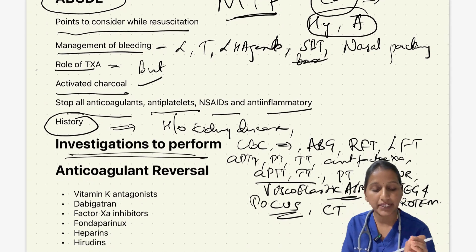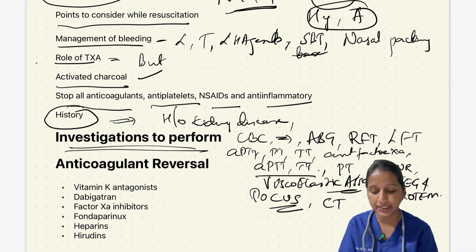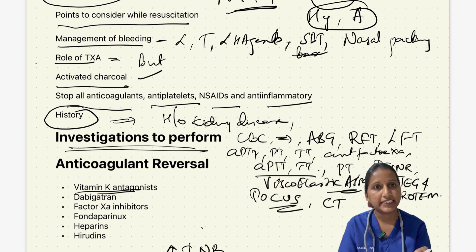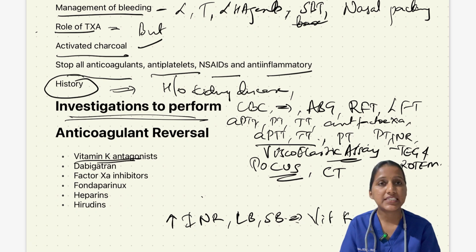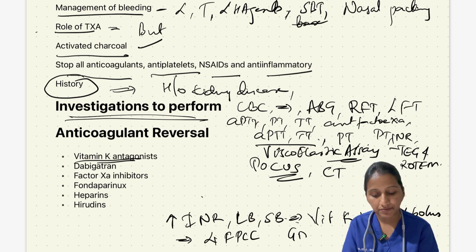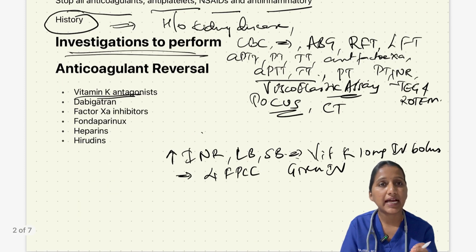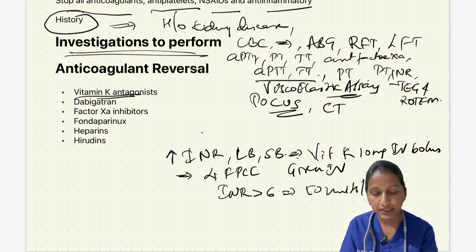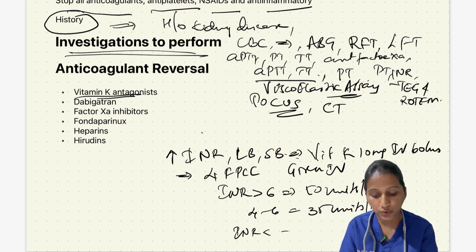For anticoagulant reversal in patients on vitamin K antagonists such as warfarin with elevated INR and life-threatening bleed: give vitamin K 10 mg IV bolus (onset 2 hours). Four-factor prothrombin complex concentrate (containing factors 2, 7, 9, 10, protein C and S) acts within 30 minutes and lasts 6–8 hours. Dosing by INR: INR >6 gives 50 units/kg; INR 4–6 gives 35 units/kg; INR <4 gives 25 units/kg.